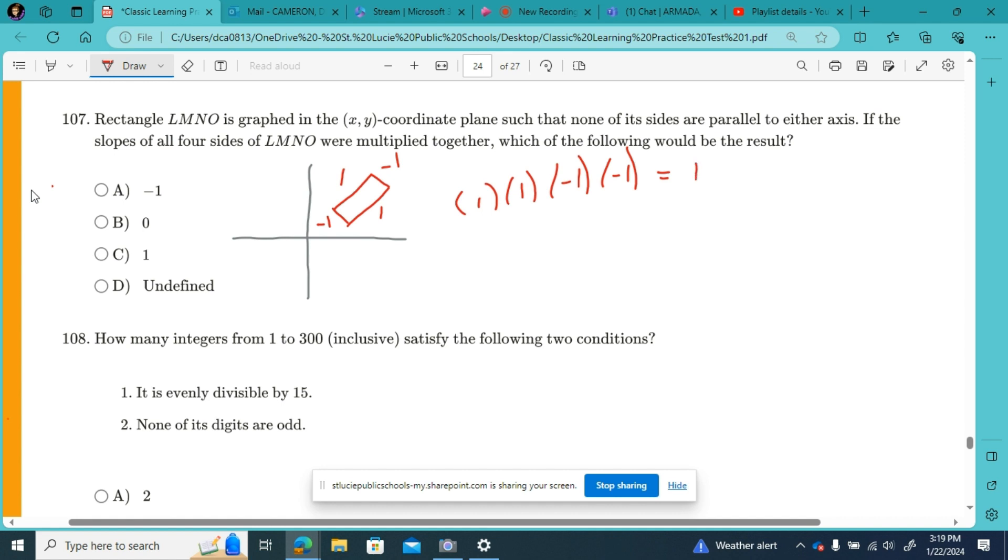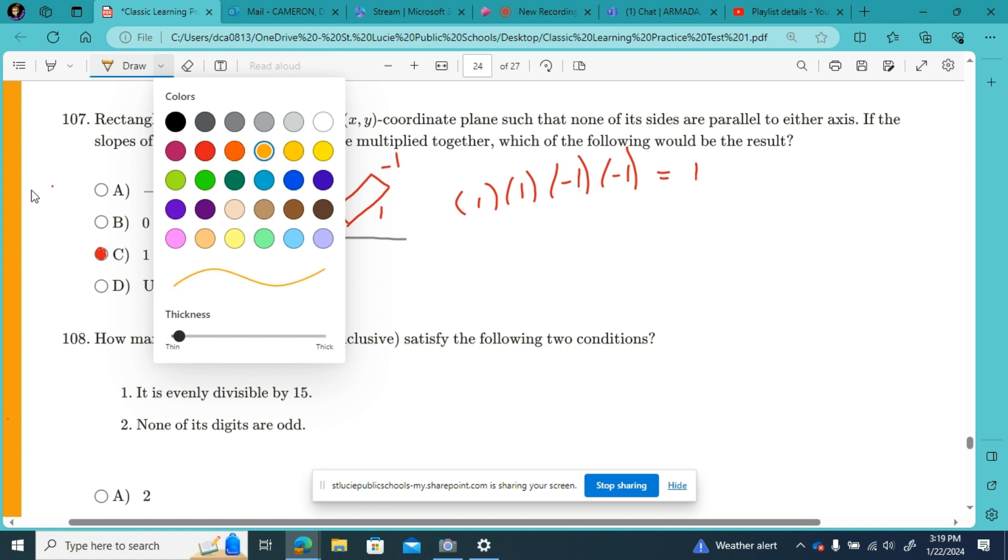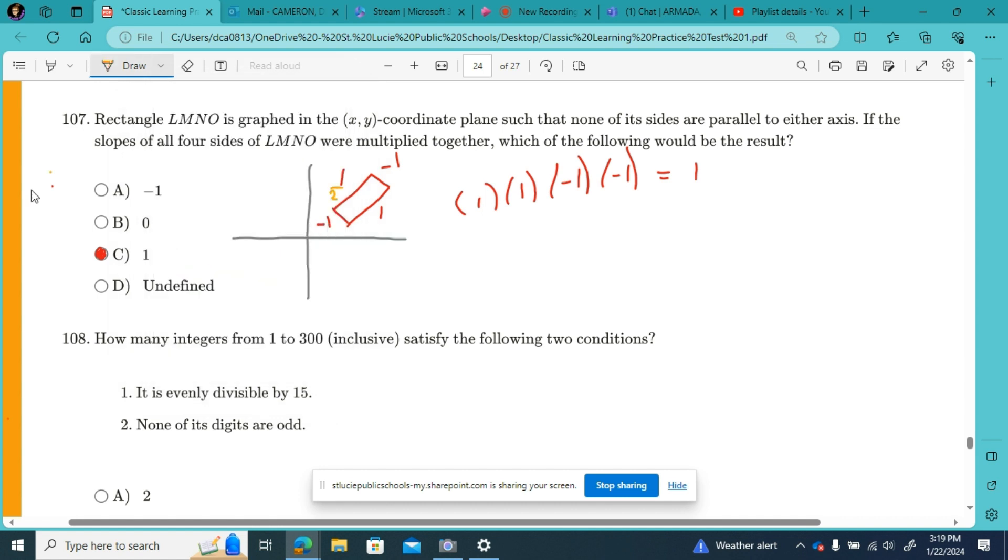So we would get 1. If our slope, we had said instead that the slope is a half, and then the perpendicular slope for the other sides, it would be negative 2 instead of negative 1. So we'd be multiplying a half times a half times negative 2 times negative 2, which would equal, the negatives would cancel out again, 4 over 4 equals 1. So no matter what our slope is, when we multiply them, we would get 1.